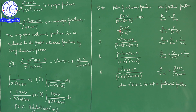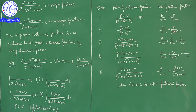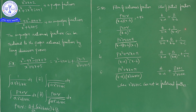When you have repeated linear factors — for example (x − a)² in the denominator — we write it as A/(x − a) + B/(x − a)². If the denominator is (x − a)³, we write A/(x − a) + B/(x − a)² + C/(x − a)³.